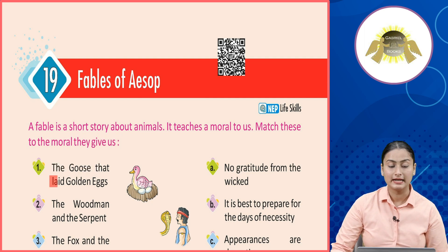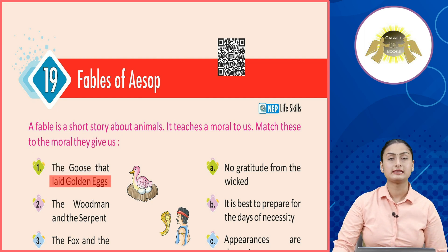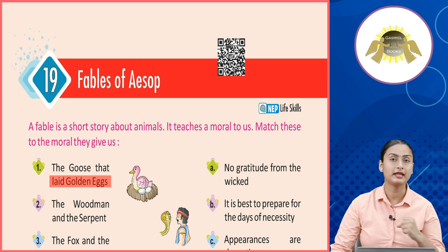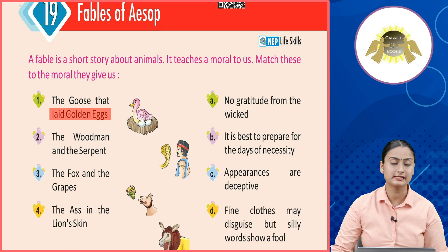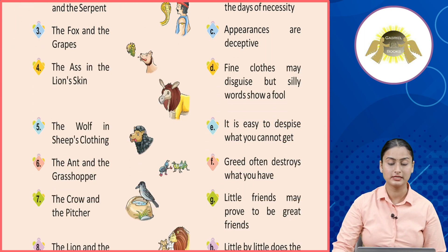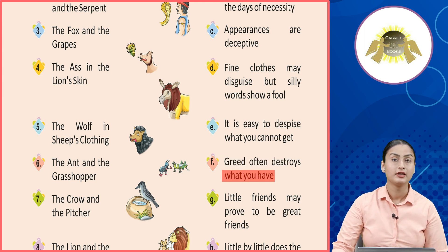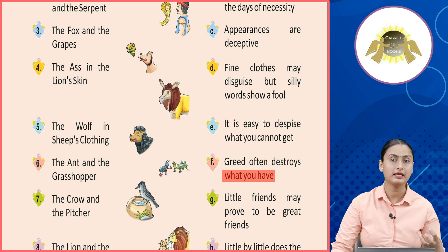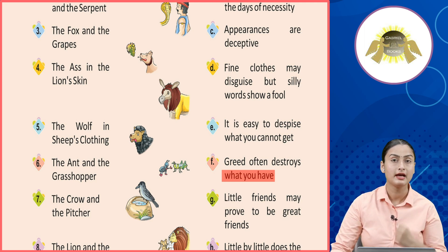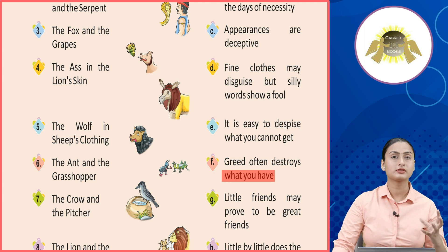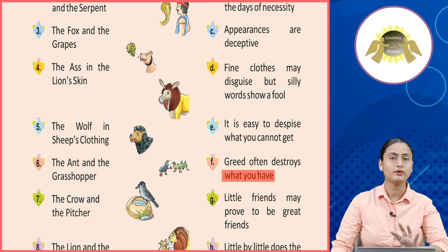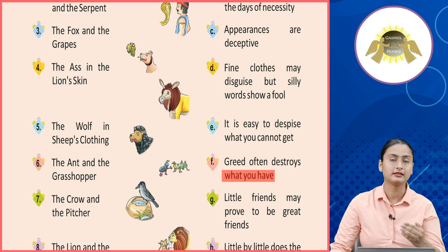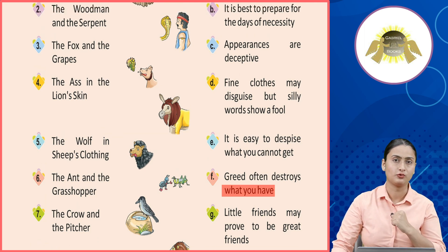Number one: The Goose That Laid Golden Eggs — ek bird jo sone ke andde deti thi. Is story se hume seekhne ko milta hai: Greed often destroys what you have. Kyunki isme ek farmer tha jisko laga ki ye sone ke andde degi toh woh ameer ho jayega, lekin uske baad jo circumstances hue, usme bhi usko nuksaan ho gaya.